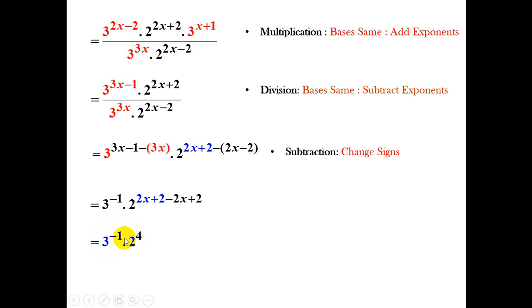You will notice that 3 to the power of minus 1, we have a negative exponent. How do we deal with the negative exponent in this problem? If we move it to the denominator, the minus 1 will change to a plus 1. So 2 to the power of 4 is 16, divided by or over 3. Thank you.